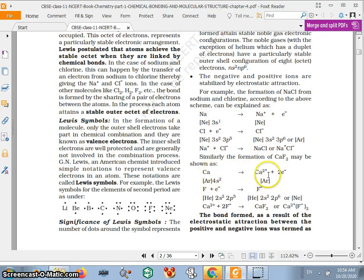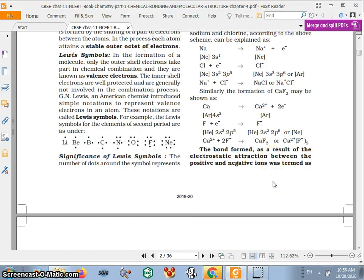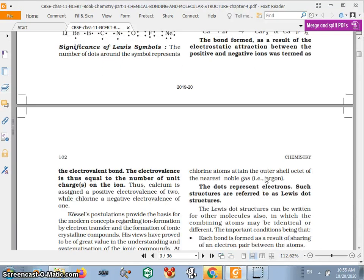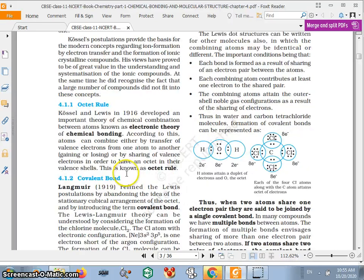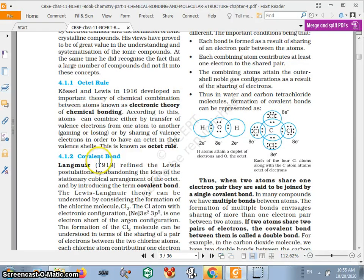Now you can see sodium takes one electron and removes one electron in making sodium plus. Here you see calcium loses two electrons and it becomes calcium 2+. So the bond formed as a result of the electrostatic attraction between the positive and negative ions was termed as the electrovalent bond. And the electrovalence is thus equal to the number of unit charges on the ion.